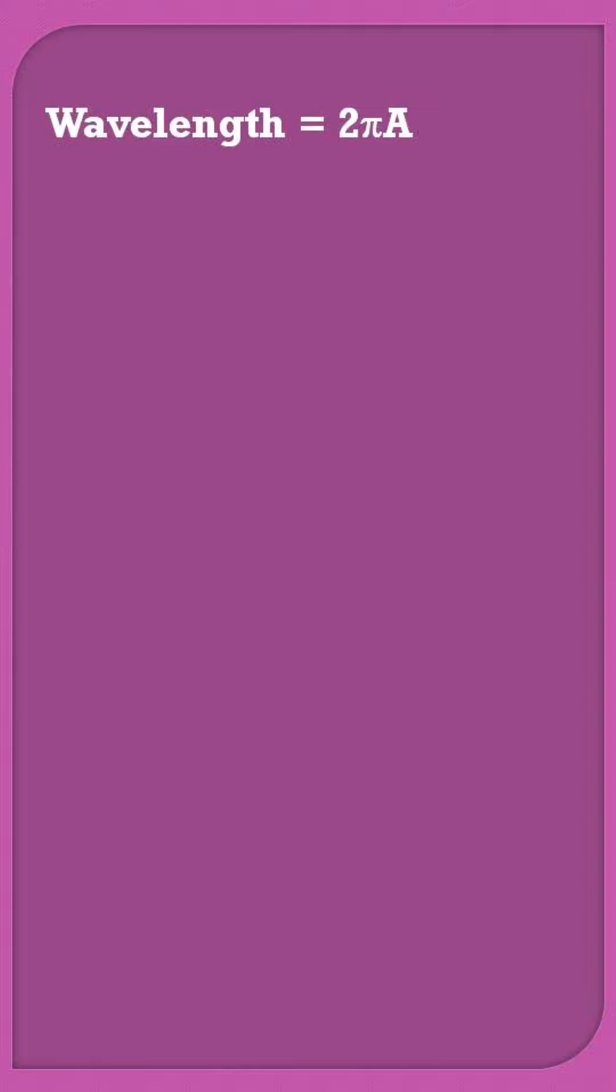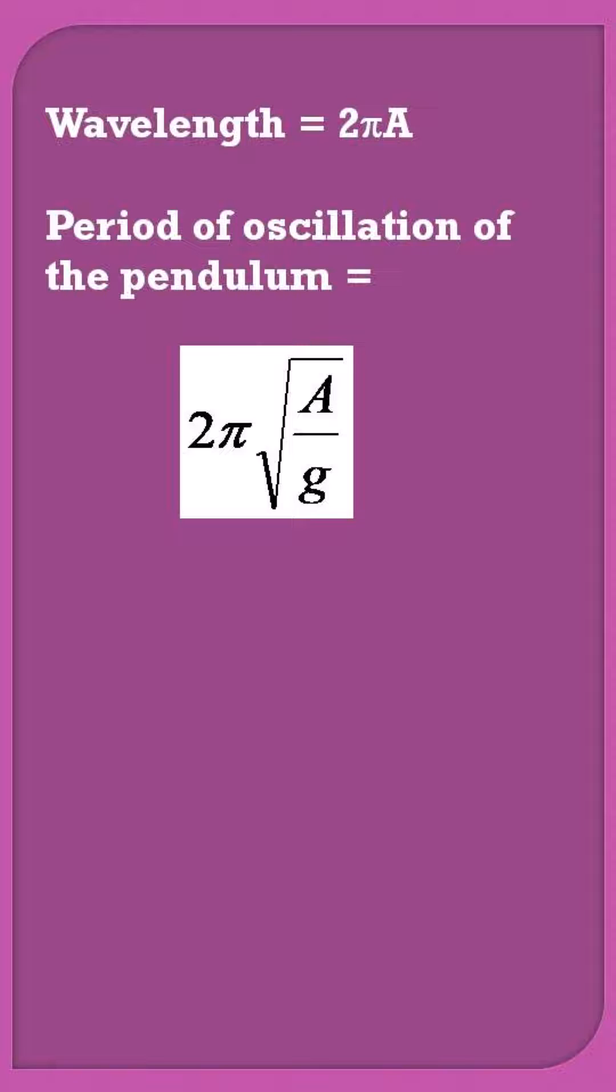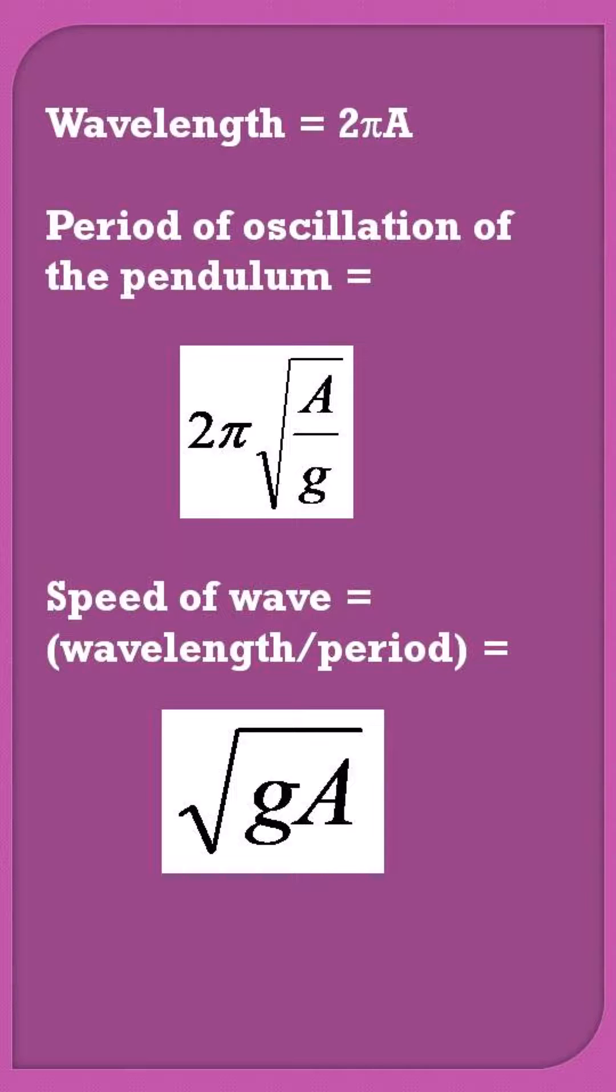With this equivalence, the wavelength of the wave comes equal to 2πa, and the period of oscillation of the pendulum is equal to 2π√(a/g).